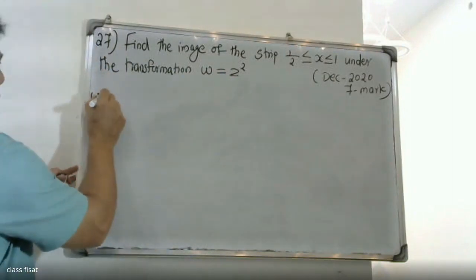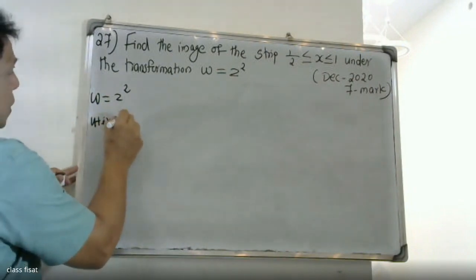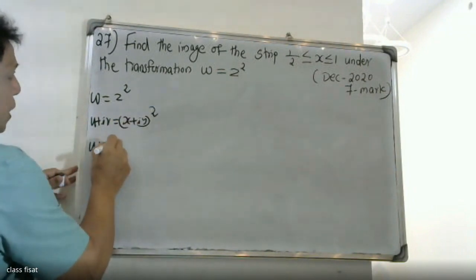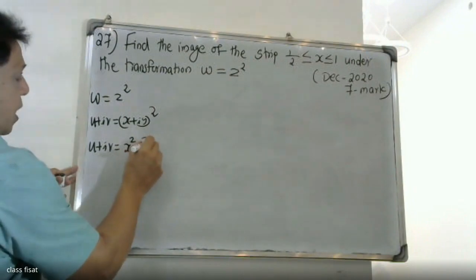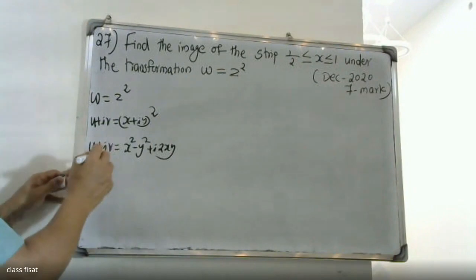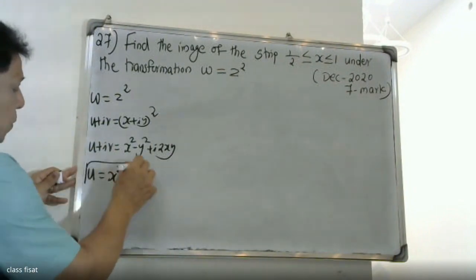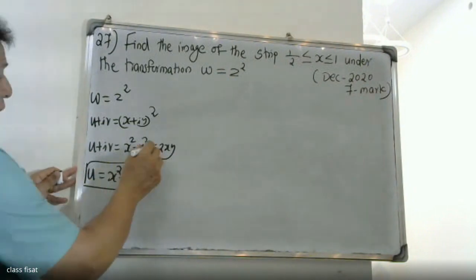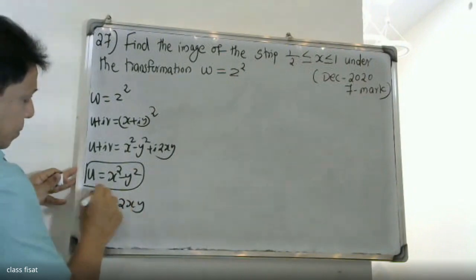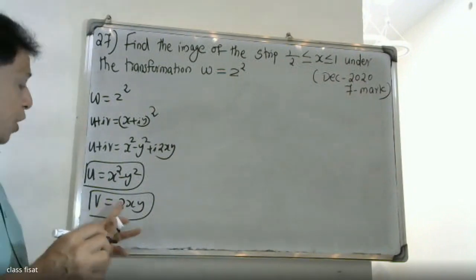W = z². W is defined as u + iv = (x + iy)², so u + iv = x² - y² + i(2xy). Separating real and imaginary parts: u = x² - y², v = 2xy.